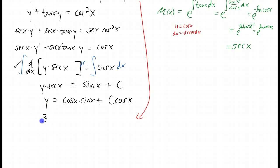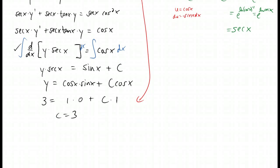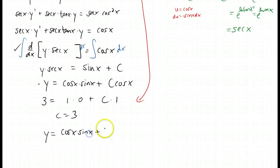We're plugging in x equals 0 and y equals 3. Cosine of 0 is just 1, sine of 0 is 0, and cosine of 0 again is 1. So you have c equals 3. And the final answer to the solution of the initial value problem is y equals cosine of x times sine of x plus 3 cosine of x.